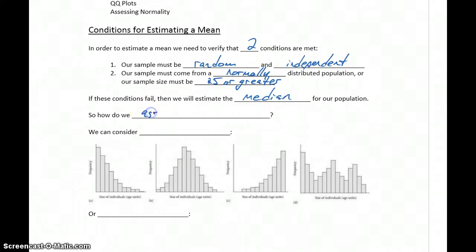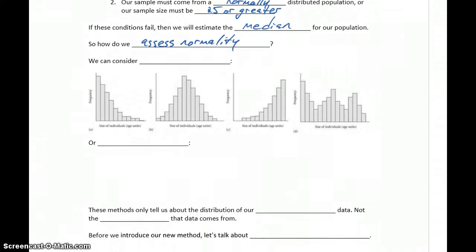So the question is, how do we assess normality? Given a set of sample data, how do we know if the larger population that that came from, meaning we don't have all the data to consider, how are we going to determine whether or not that comes from a normal population?